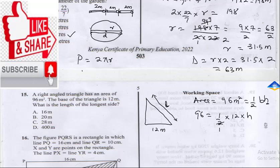Half of 12 is 6, so we have 96 is equal to 6 times h. Divide both sides by 6, so 6 cancels out and you have h is equal to 96 over 6.